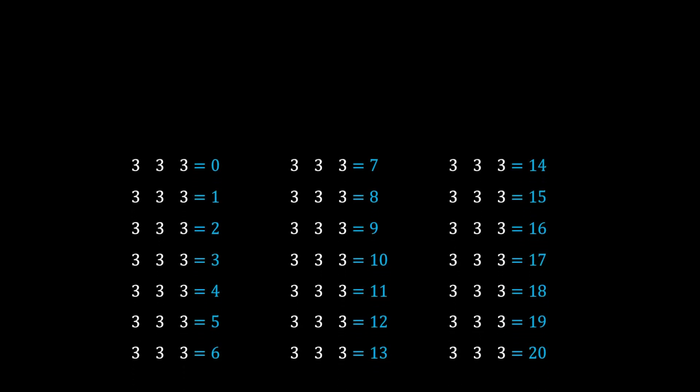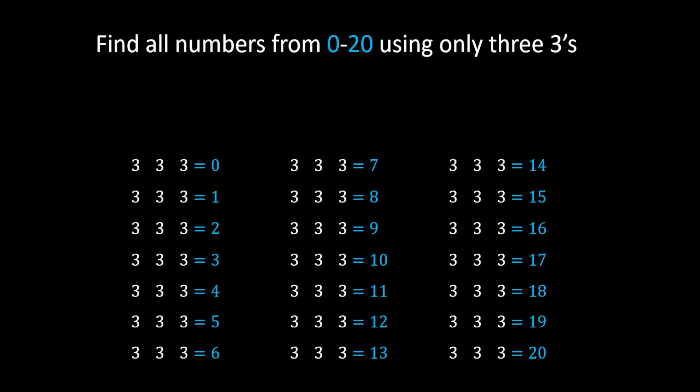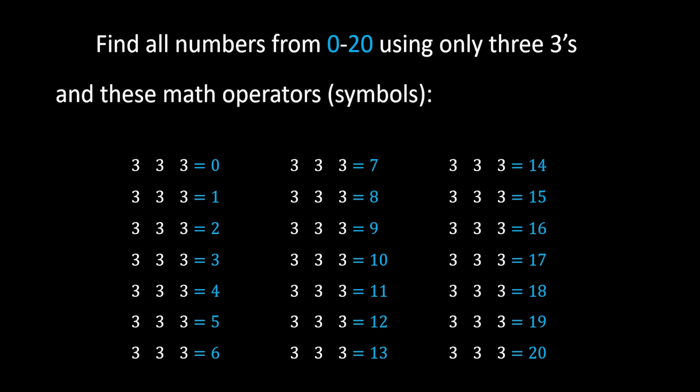Today we have quite an interesting math challenge. We need to find all numbers from 0 to 20 using only three 3s and the following math operators or symbols. You can only use these symbols and nothing else is allowed. Some of these numbers are very easy to find and some of them are a little bit harder, but overall it's an interesting one.